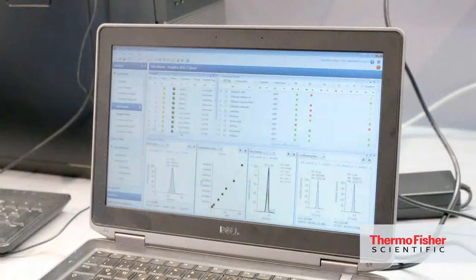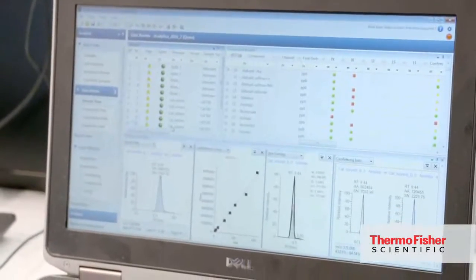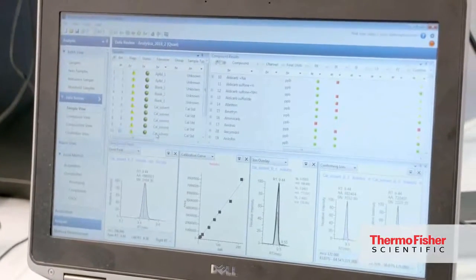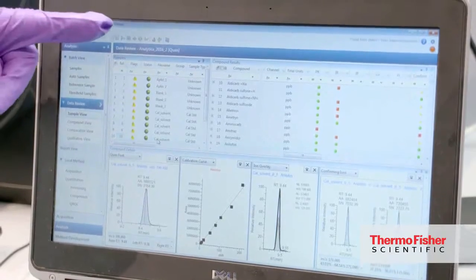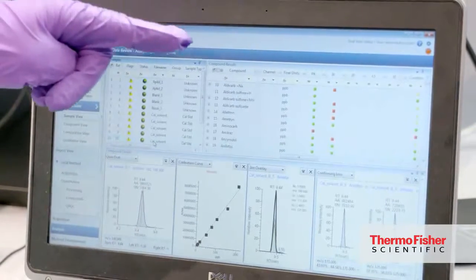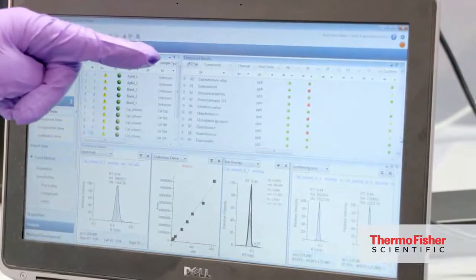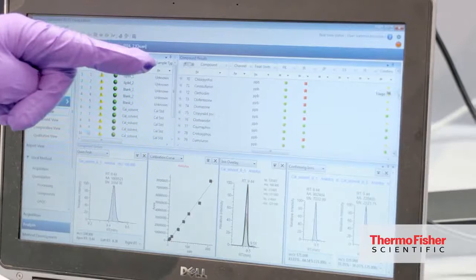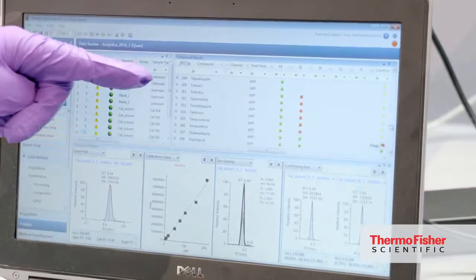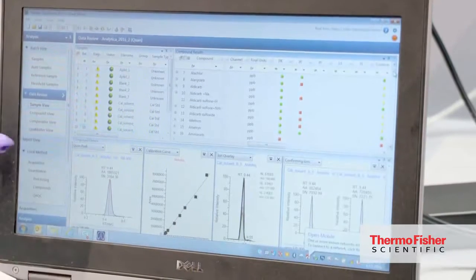Evaluation of the measured sample is done by the high-throughput software TraceFinder. Here is a typical panel of TraceFinder where you can see all of the samples what were measured. You can see all of the compounds which are checked. You see that nearly 300 compounds which are currently analyzed and screened. And also you have the flagging system.